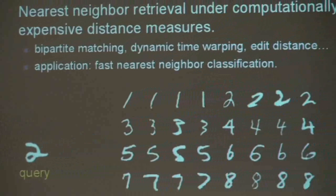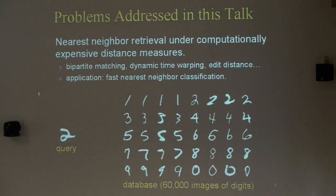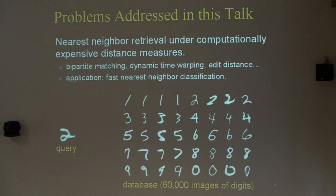I'm going to talk about three different projects. The first project is in the more classic setup of nearest neighbor retrieval, where you have a database of objects — for example, a database of images of handwritten digits — and you have a query image for which you want to find the nearest neighbors for purposes such as classification. This part of the talk focuses on how to do this efficiently when the distance measure is not a simple Euclidean distance but something more computationally expensive.